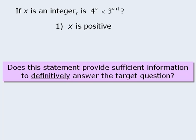It's hard to tell at the moment. Let's try plugging in some numbers to see if this reveals anything. We'll use a table to help organize our results. First we'll choose some values for x that satisfy the condition in statement 1 that says x must be positive. Then, using these values for x, we'll ask our target question: is 4 to the power of x less than 3 to the power of x plus 1?